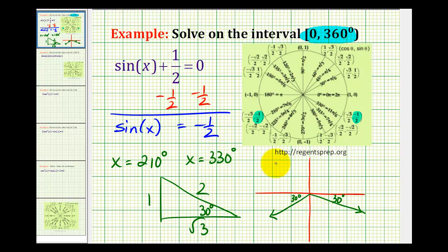To make it even more clear, we could sketch the reference triangles. This would be negative 1, this would be 2, and this would be square root 3. And the same in the fourth quadrant. This would be negative 1, this would be 2, and this would be square root 3.